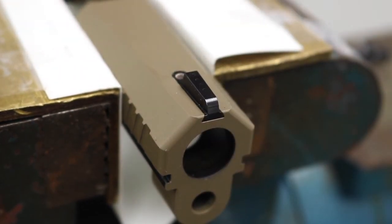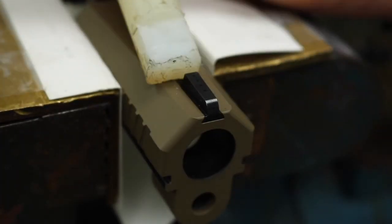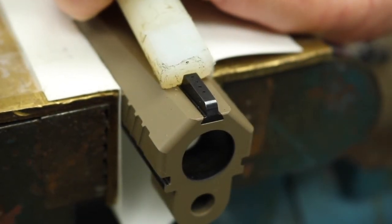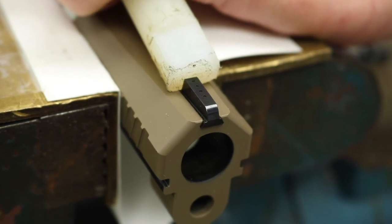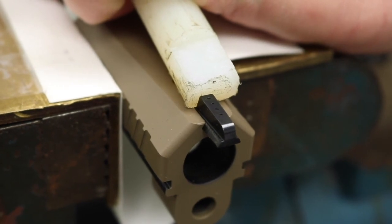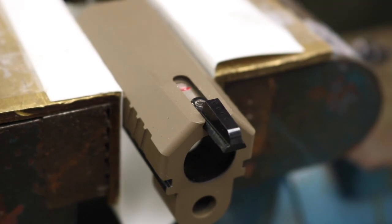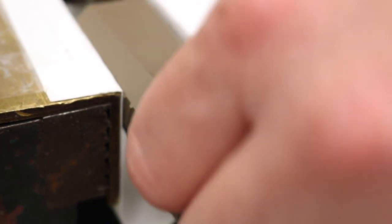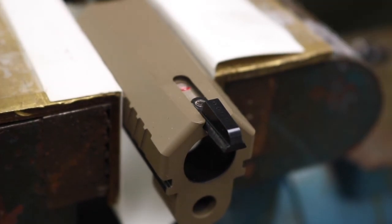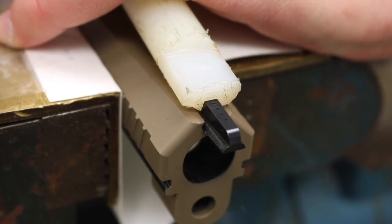That's not going to come out with finger pressure. We're going to have to persuade it a little bit. So we'll take a hammer and a punch. Let's see if I can do this, so everybody can see. Notice I'm using a plastic punch in this case. You know, this slide is Cerakoted. We don't want to tear anything up. So the plastic isn't going to hurt the sight or the slide.